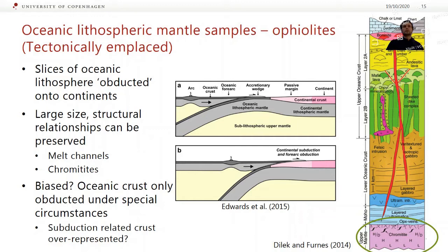In terms of oceanic lithosphere, probably some of the better ones to understand are ophiolites — these are tectonically emplaced slices of oceanic lithosphere. On the right is a schematic cross-section through a subduction-related ophiolite. You can see at the bottom a little slice of upper mantle that came up with the oceanic crust, and above it there's layered ultramafic material, sheeted dike complexes, lavas, and then at the top some sediments. The good thing about ophiolites is that they can be very large, and sometimes we get really well-preserved structural relationships — we can actually see what's happening, where the different rock types in the mantle are with respect to one another, including features like melt channels and chromitites.